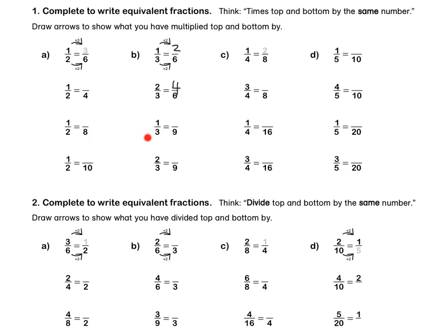Let's look at this question. 3 times 3 is 9, so 1 times 3 is 3. We have times the top and the bottom by 3. Lastly, 3 times 3 is 9 and 2 times 3 is 6.